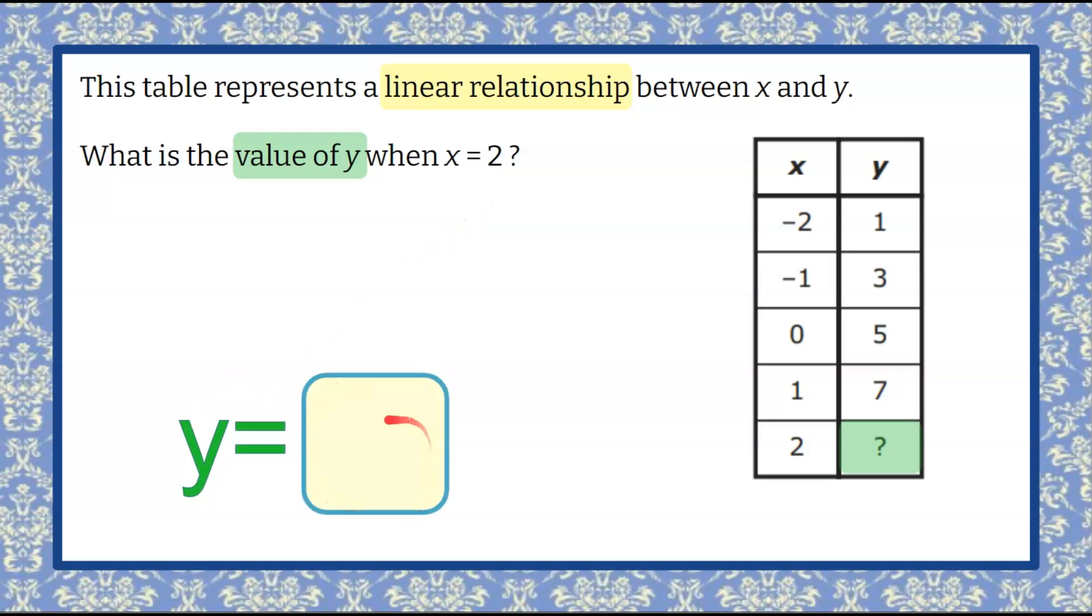We're going to set it up: Y equals, and we'll fill in this box. Now we're looking for Y when X is 2. So in our table, here's where X is 2, and we're going to find this missing value of Y.